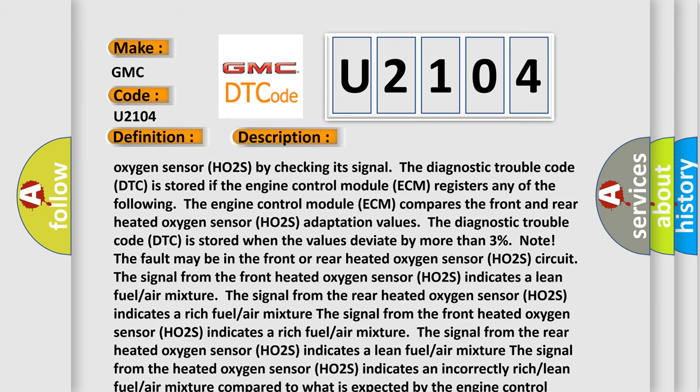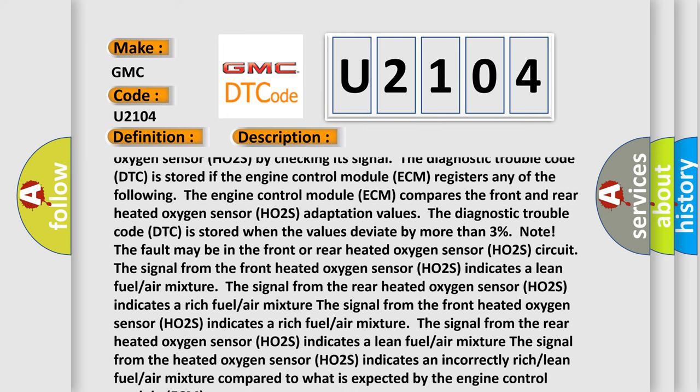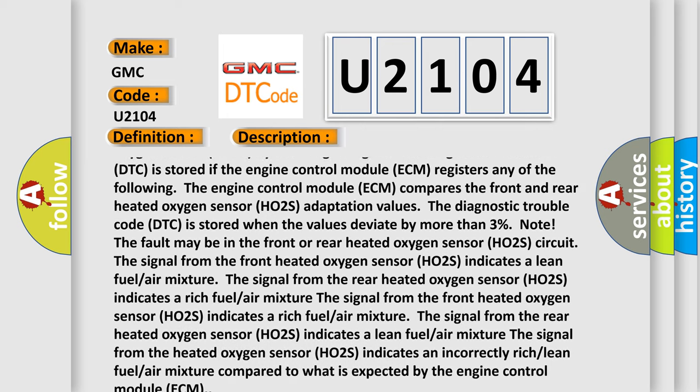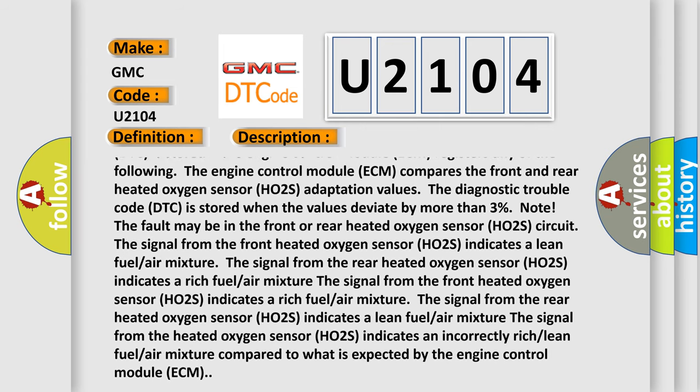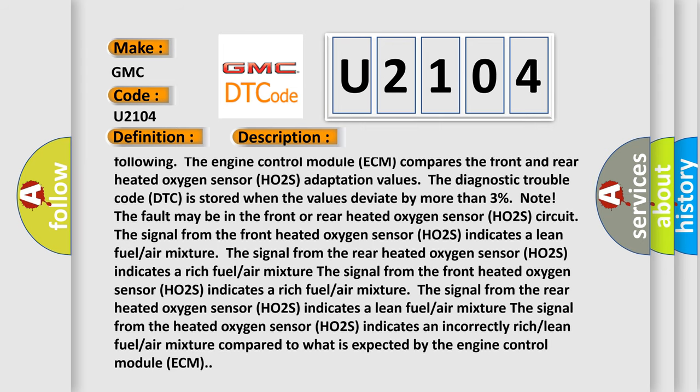The engine control module ECM compares the front and rear heated oxygen sensor HO2S adaptation values. The diagnostic trouble code DTC is stored when the values deviate by more than 3%. Note: the fault may be in the front or rear heated oxygen sensor HO2S circuit.